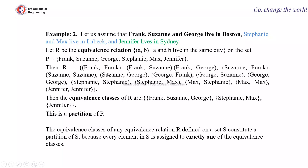How these subsets are formed: start from Frank. Frank is related to Frank, and Frank is related to Susanne, so Frank and Susanne come into this set. Then Susanne is linked with Frank — already there. Susanne is linked with Susanne (reflexive). Then Susanne is related to George, so George will also come into the same set. From George, again Frank, Susanne, and George are covered. So this subset is reflexive, symmetric, and transitive.